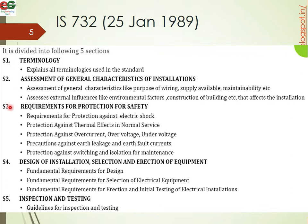Section 3 covers requirements for protection for safety. This includes protection against electrical shock, protection against thermal effects in normal service — for example, a 5-ampere wire has thermal effects and insulation requirements — protection against overcurrent, overvoltage, undervoltage, precautions against earth leakage and earth fault current, and protection switching and isolation for maintenance.